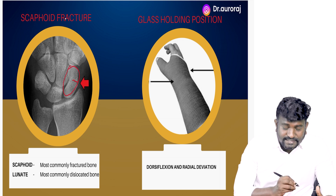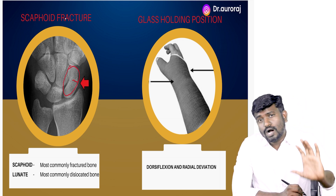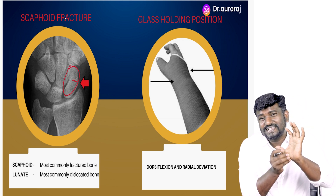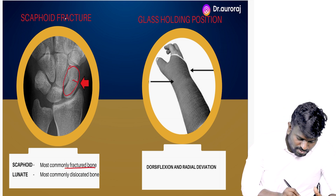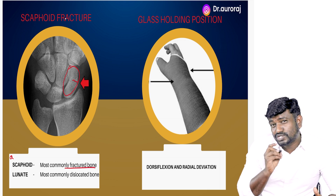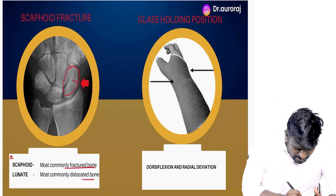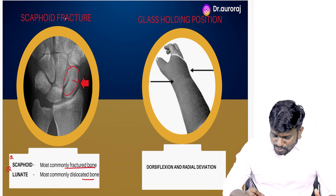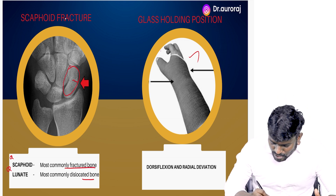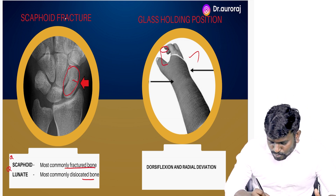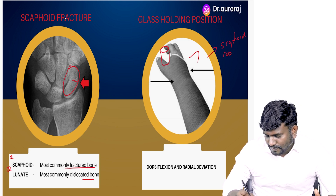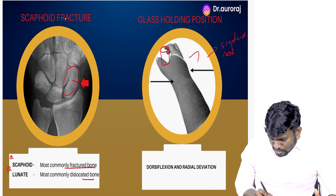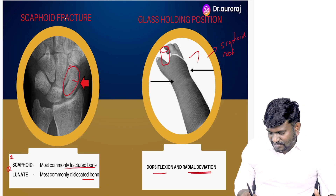This image is going to be a scaphoid fracture. Fall on outstretched hand is going to cause scaphoid fracture. The most commonly fractured bone in the hand is going to be the scaphoid. The most commonly dislocated bone in the hand is going to be the lunate. This image shows the glass-holding position, also called as scaphoid cast. It restricts dorsiflexion and radial deviation.